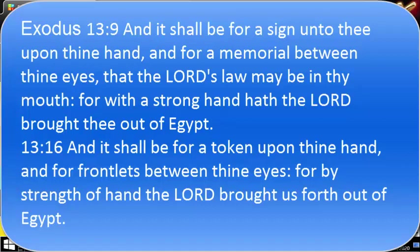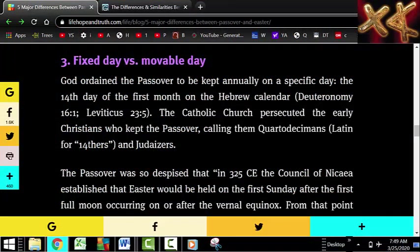Number three: fixed day versus movable day. God ordained the Passover to be kept annually on a specific day — the 14th day of the first month on the Hebrew calendar, found in Deuteronomy 16:1 and Leviticus 23:5. The Hebrew calendar was the original calendar, sometimes called the Enoch calendar or the sacred calendar — instituted by the Father, where months start with new moons. It begins in the spring, as any new year should, and in its first month you celebrate the spring feasts: Passover, unleavened bread, and first fruits.